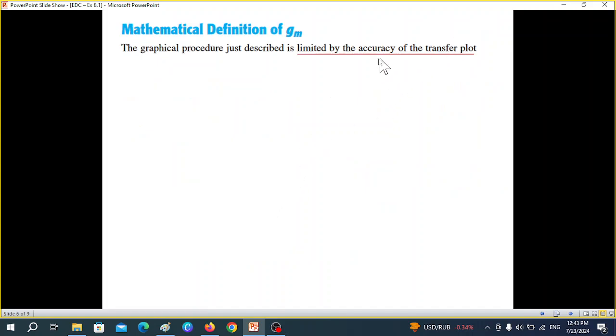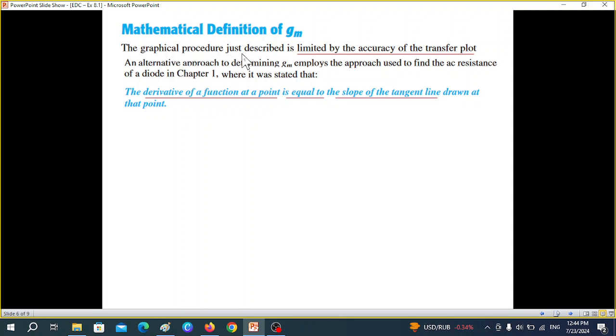Now this was the graphical method. We can also find it by mathematical methods. So let's derive the mathematical formula from the definition of GM. The graphical procedure just described is limited by the accuracy of the transfer plot. An alternative approach is to determine GM employs the approach used to find the AC resistance of a diode in chapter 1, where it was stated that the derivative of a function at a point is equal to the slope of the tangent line.